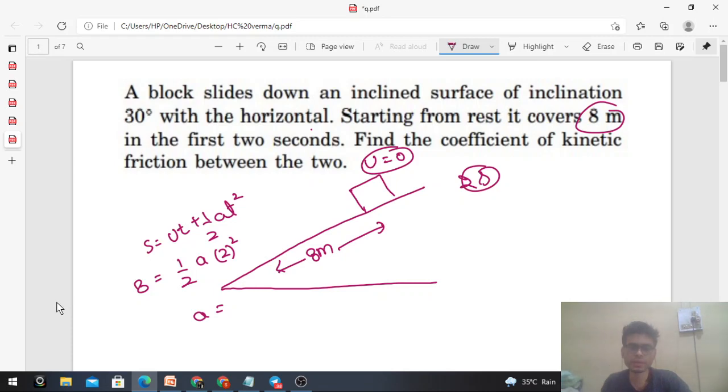Acceleration ka value kitna hara? Check karo. So 2 times 4, 4 meters per second squared. Once you got the acceleration, now draw the free body diagram of this block.